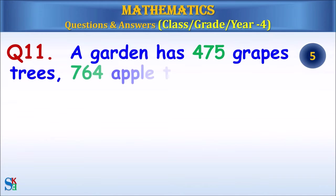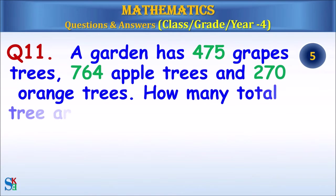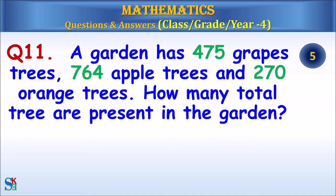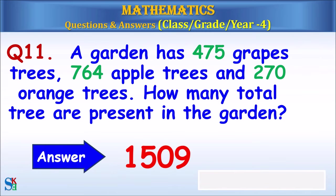Question 11: A garden has 475 grape trees, 764 apple trees and 270 orange trees. How many total trees are present in the garden? The answer is 1509.